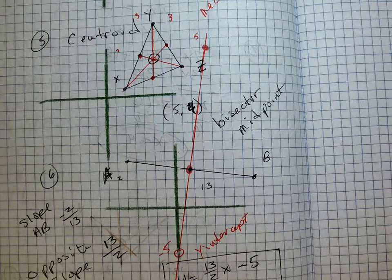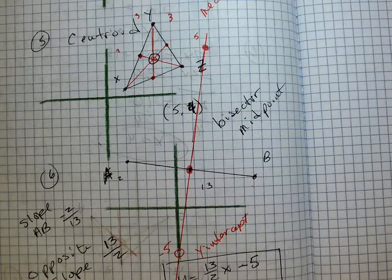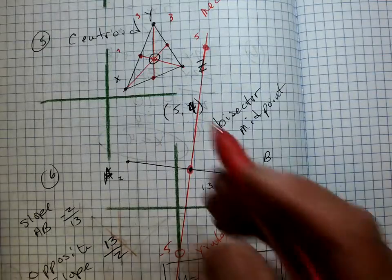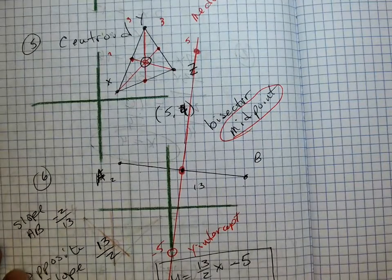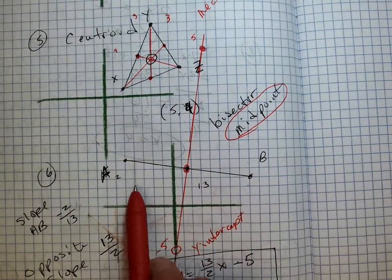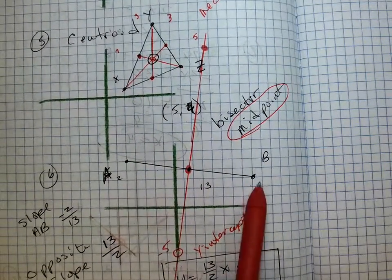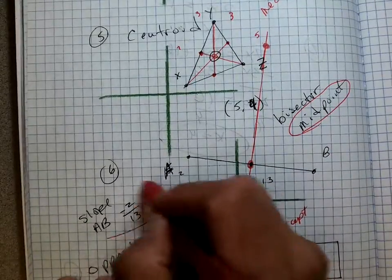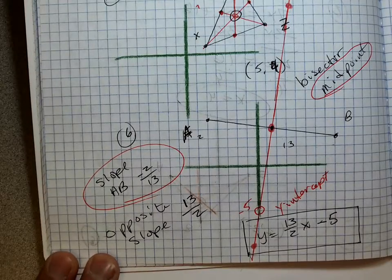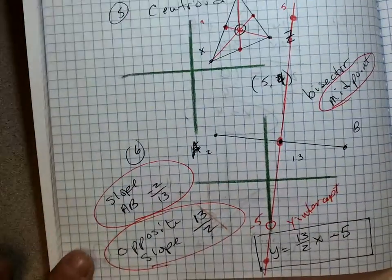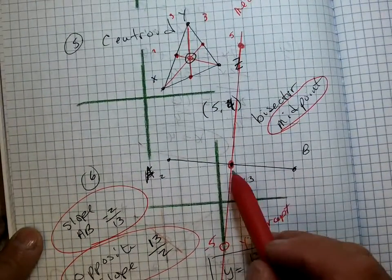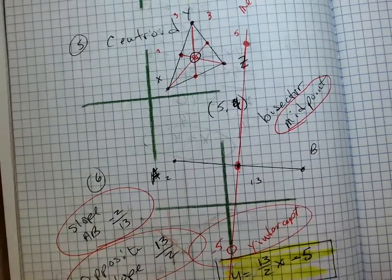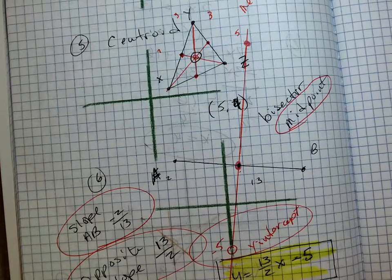This is probably the hardest question on the test. You need to know several things: first, graph the original line segment. Then find the midpoint by counting — take the journey and go half. Then find the slope of AB. Once you have the slope, find the opposite slope. Graph your bisector through the midpoint. Finally, find the y-intercept to write your equation. Hopefully you can do that tomorrow.